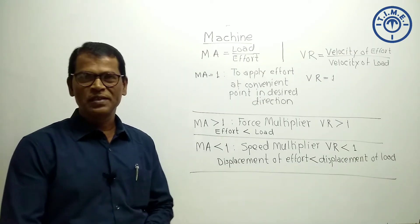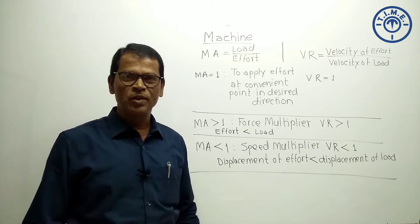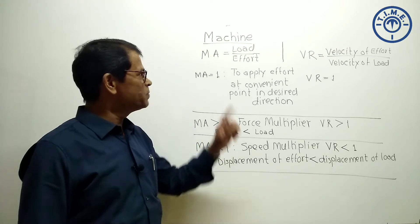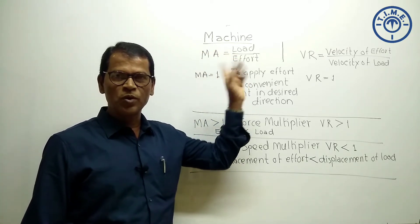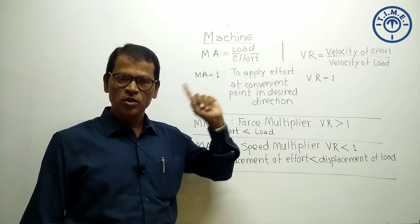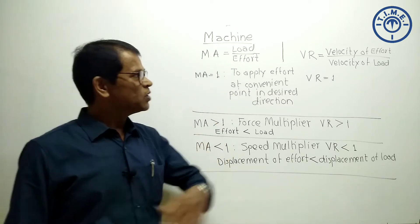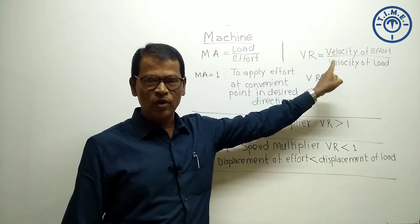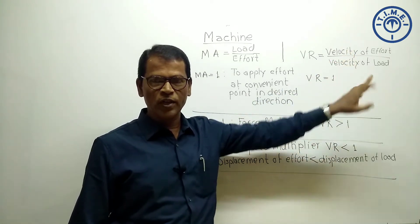Now we are studying some terms related to machines: mechanical advantage and velocity ratio. What is mechanical advantage? It is the simple ratio of load to effort. Load is a force, effort is a force — it is a ratio of the same physical quantity, so it has no unit. Velocity ratio is the ratio of velocity of effort to velocity of load, also a ratio of the same physical quantity, so it has no unit.